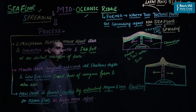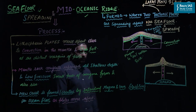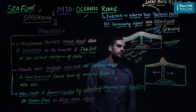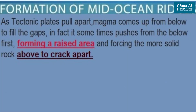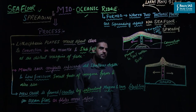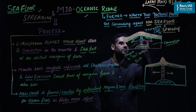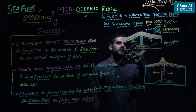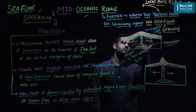New crust is formed by intruding magma and lava erupting on the ocean floor as the plates move apart. In the process of formation of mid-oceanic ridges, as tectonic plates pull apart, magma comes up from below to fill the gap. Initially the lithosphere, including the crust, is in solid state. So it sometimes pushes from below first, forming a raised area and forcing solid rocks above to crack apart. As soon as magma initially rises, it does not directly come out — it slightly results in the upliftment of the hard crust.